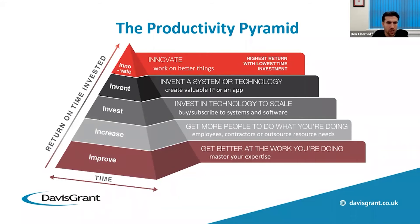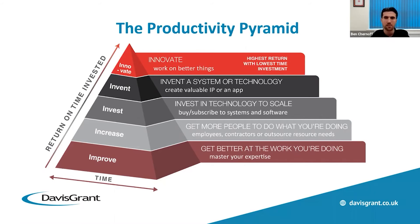This is a really interesting diagram — the productivity pyramid — which shows how we can better leverage our business and work smarter, not harder. Step one of the pyramid is about getting better at what you're doing by undertaking training, studying, continuing professional development, and getting better at utilising the technology that you already have in your business. This is really important step one.